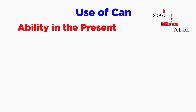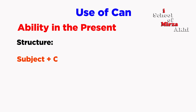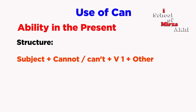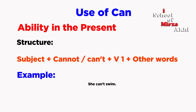Ability in the present — affirmative structure: Subject plus can plus V1 plus other words. For the negative, use cannot. For example: She can't swing.